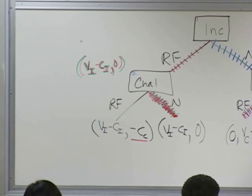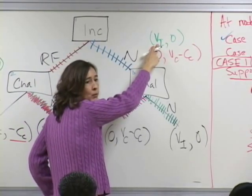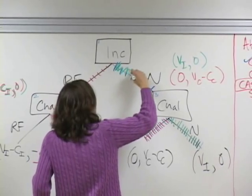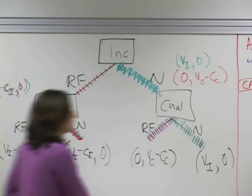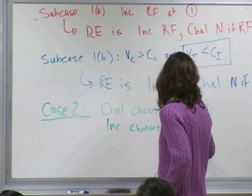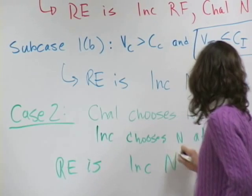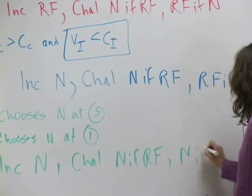In case two, what's the incumbent going to do? Not raise funds. In case two, I'm the incumbent—I can win office even if I don't raise funds because the challenger doesn't care. I have an unmotivated challenger. I don't need to raise funds; that's what I'd rather do. So in case two, the incumbent chooses not at node one. The rollback equilibrium is: incumbent not, challenger not if the incumbent raises funds, and not if the incumbent does not.